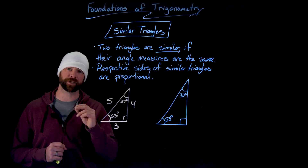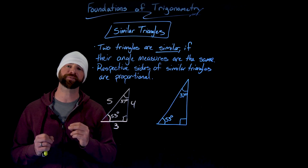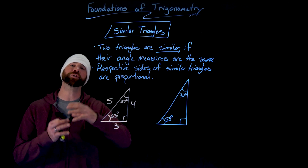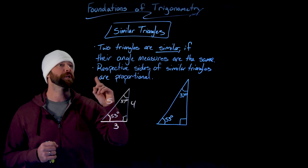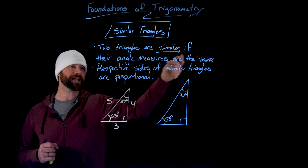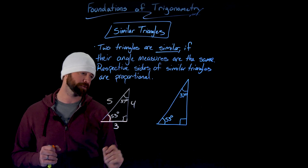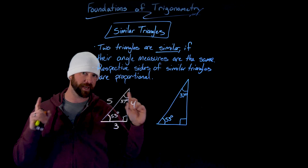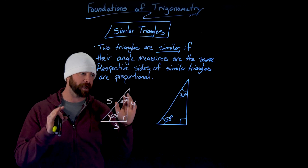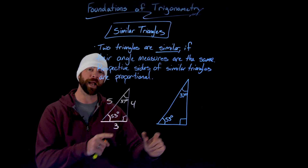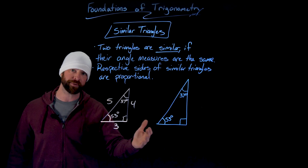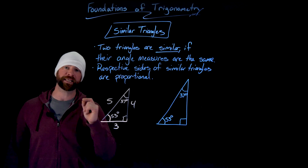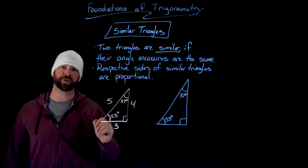Now for what I think is the most important concept as the foundation for trigonometry: the idea of similar triangles. Two triangles are similar if their angle measures are the same. Here I have two different triangles — one with all angles and side measures written in. As soon as I fill in side measures for the other, they'll definitely be similar because all their angle measures are exactly the same. These are right triangles because they have a 90-degree angle. The important piece is that the respective sides of similar triangles are proportional.